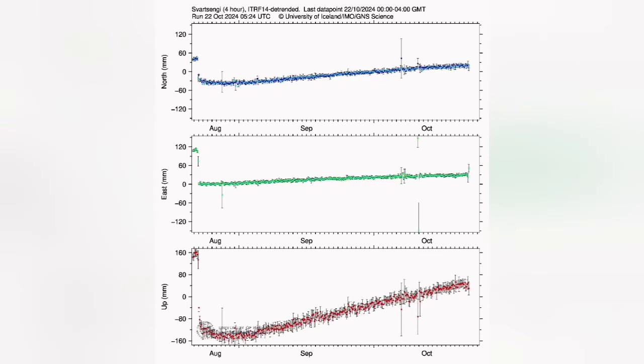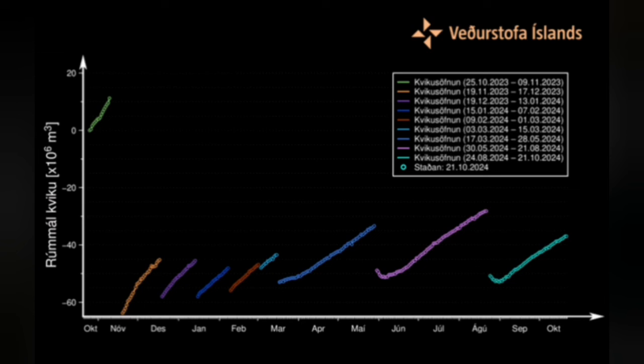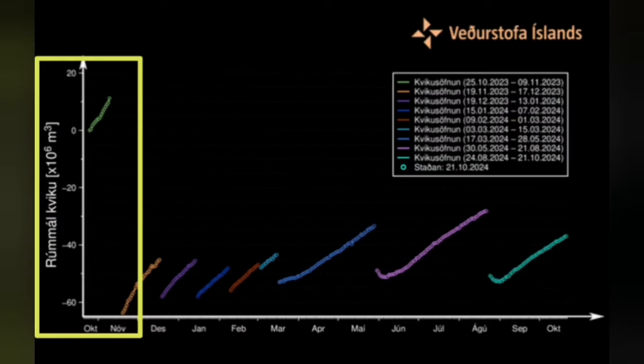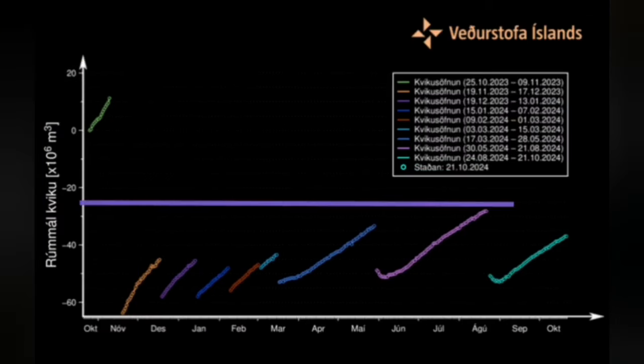This is the accumulated data. In the previous eruption, we had around 24 million cubic meters of magma. The measurement is GPS data, and based on that, at this stage we have 14 million cubic meters.